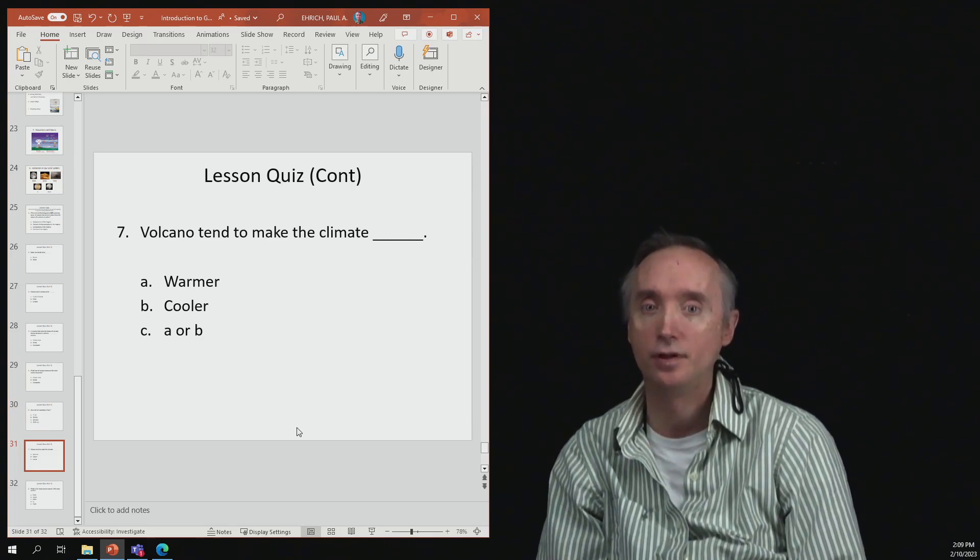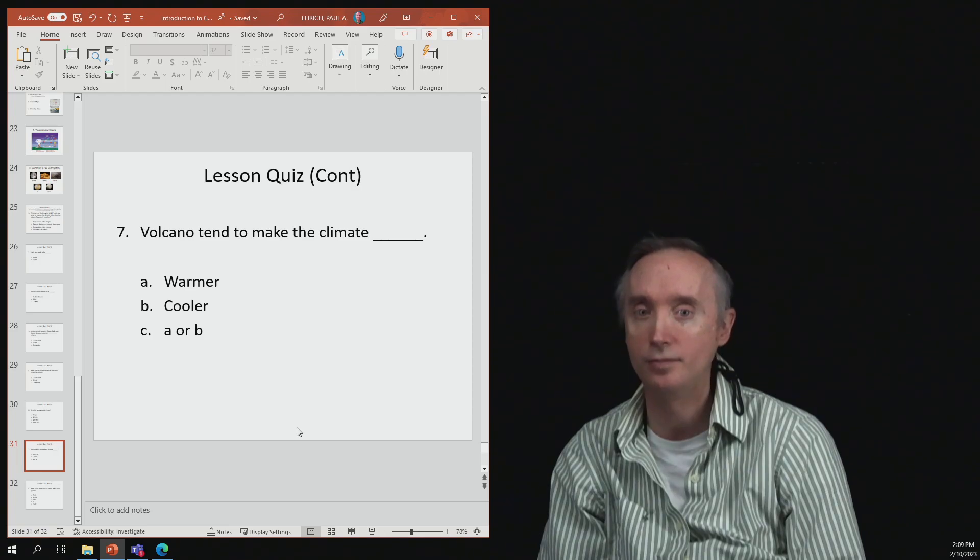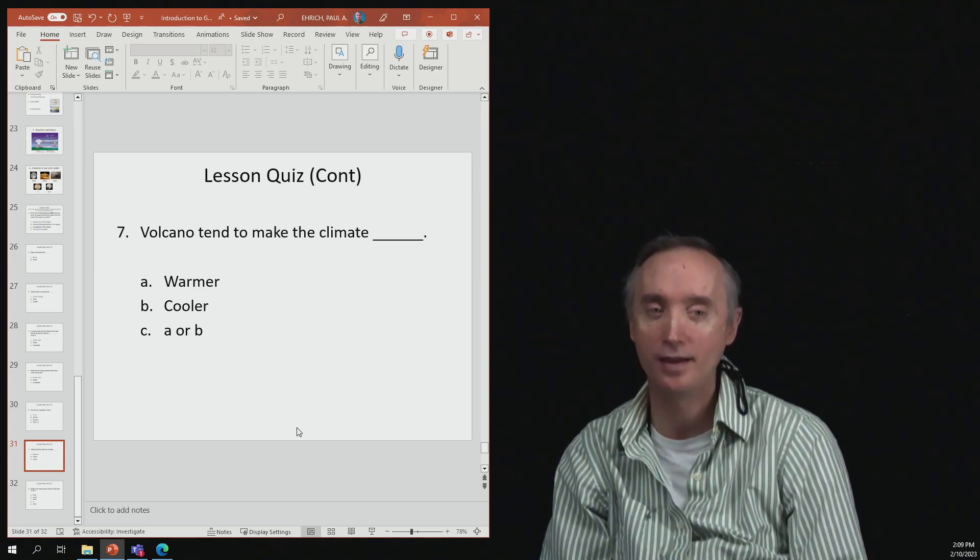Number seven: volcanoes tend to make the climate what? Warmer? Cooler? Both of them - both A and B.